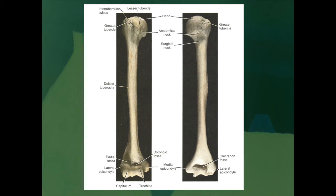Many of the measurements William Bass describes have to do with growth and development. The humerus can be used to estimate stature, but it is not as reliable as the long bones of the lower extremities — the tibia being the most important for giving a reasonable estimate of height. With the exception of the humeral head, the humerus is a more species-specific bone in that we do not see as much ethnic, racial, or geographic variation in many of its measurements.